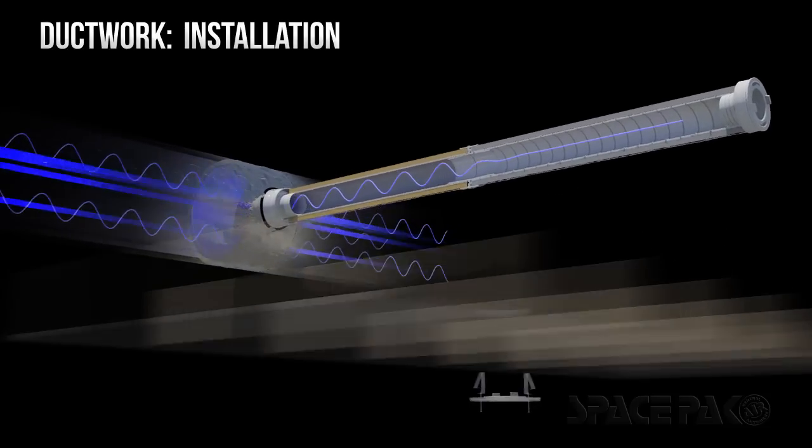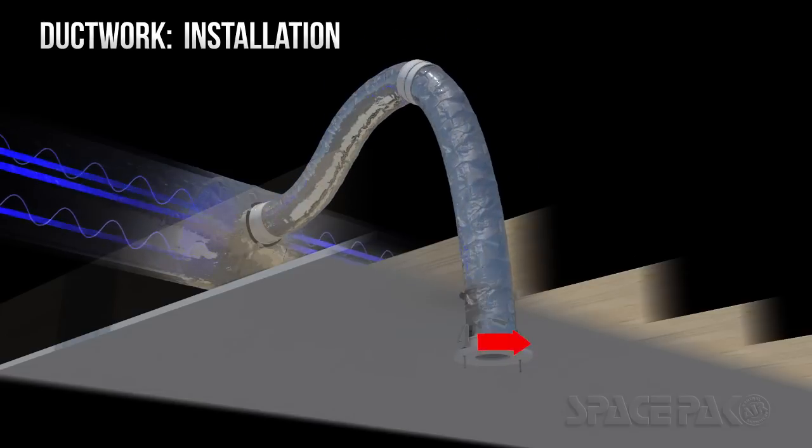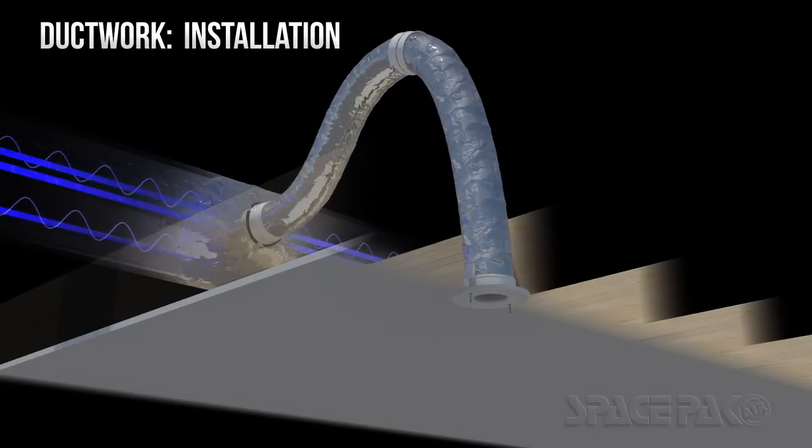At the other end, the flexible duct attaches to a wall terminator using the same patented quick connect fittings and circulates treated air into your room.